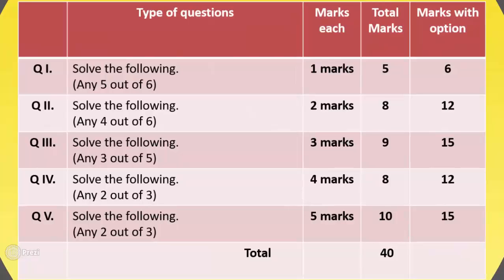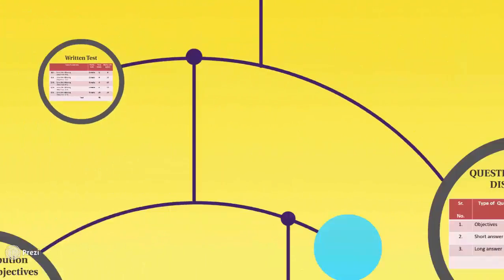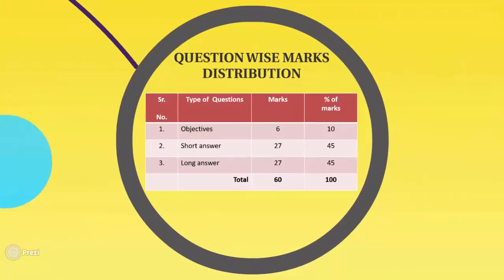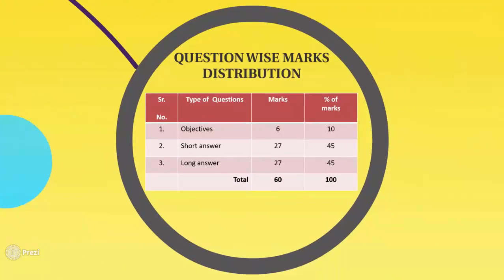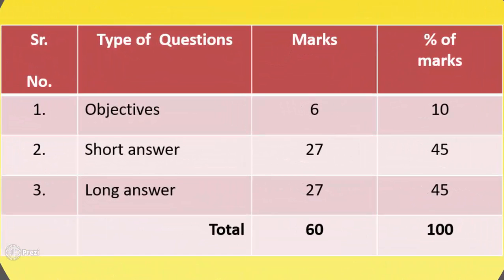We have total marks for the geometry paper as 40. Next we see the question-wise marks distribution. The first type of question is objectives. Marks for objectives are 6, and the percentage of marks is 10.